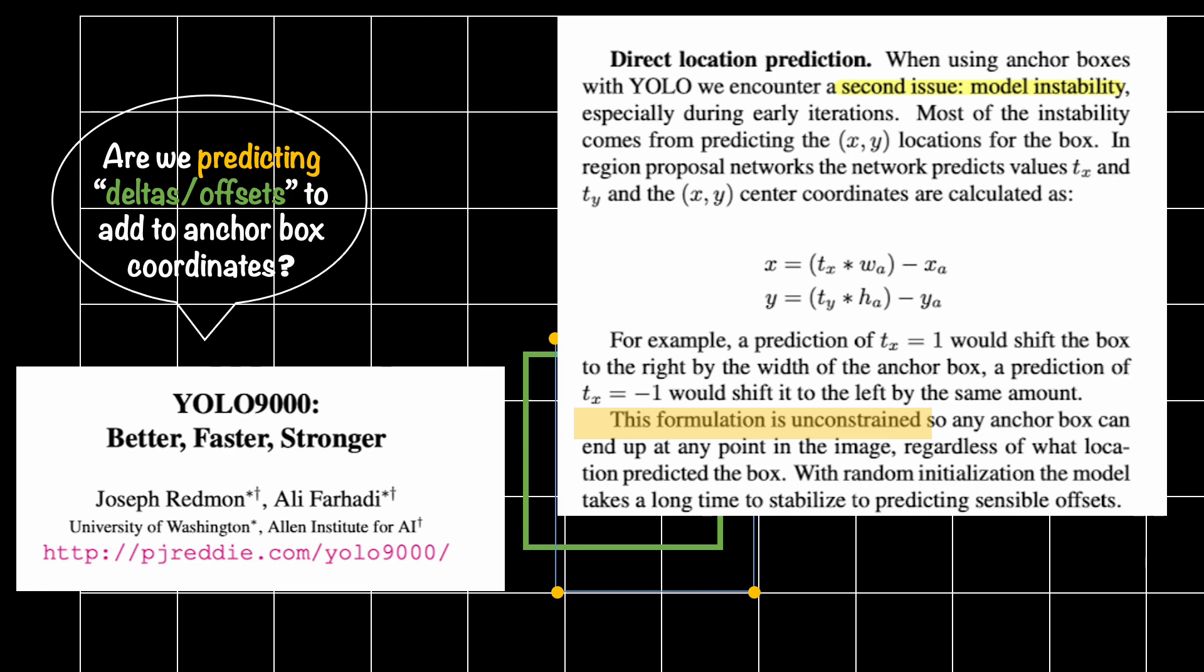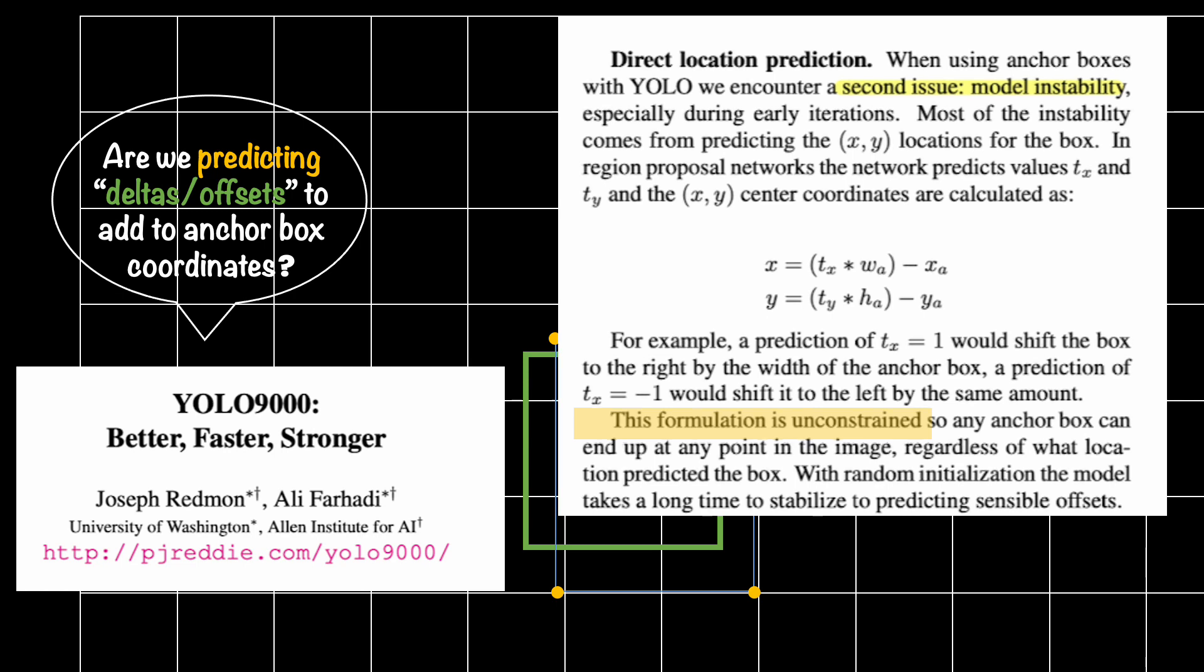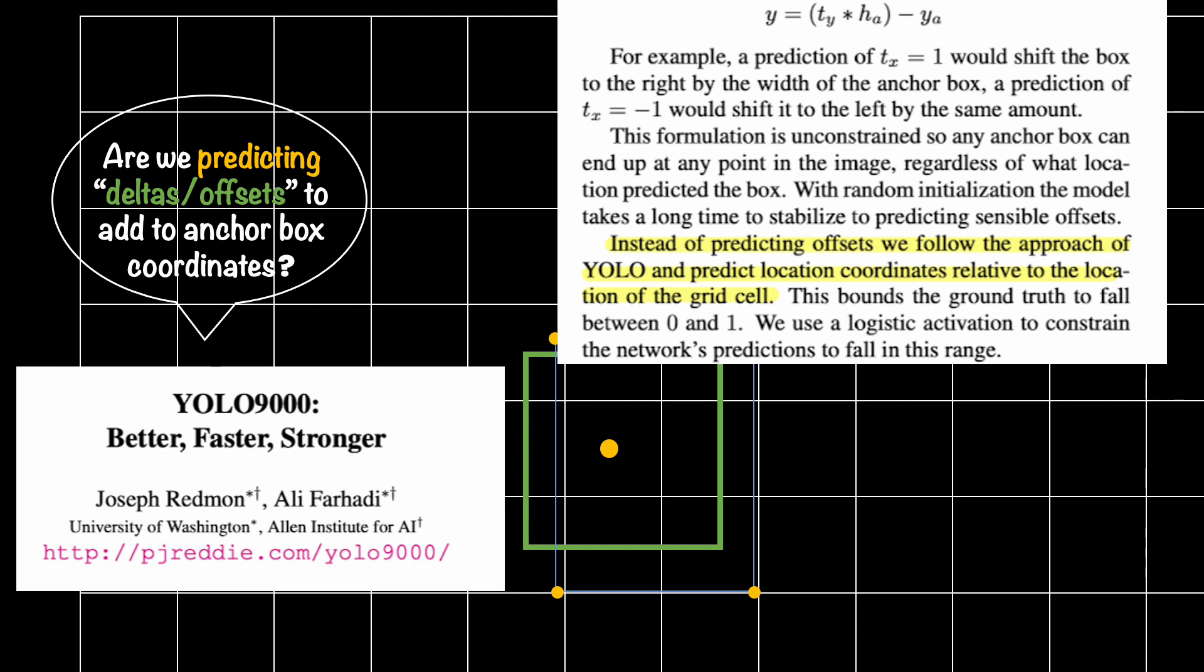This formulation is unconstrained, so any anchor box can end up at any point in the image, regardless of what location predicted the box. With random initialization, the model takes a long time to stabilize to predict sensible offsets. You can see that they are also saying that it will take a little bit longer. The formulation is not invalid as such. And finally, they suggest a remedy.